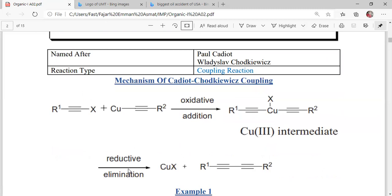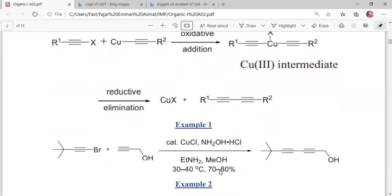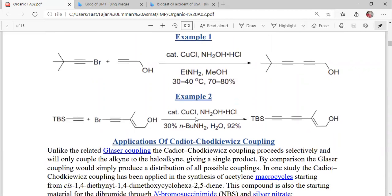To form copper halide and bis-acetylene. These are the two examples of this type of coupling. Now we will discuss its applications.